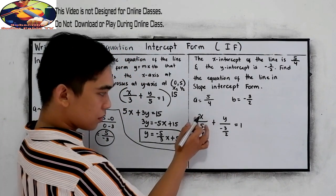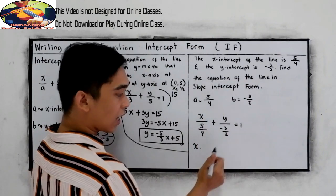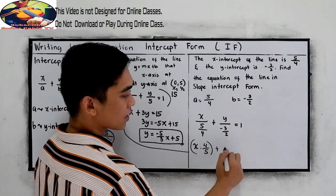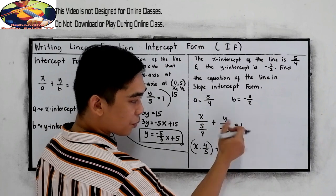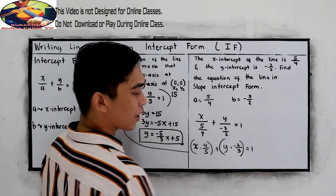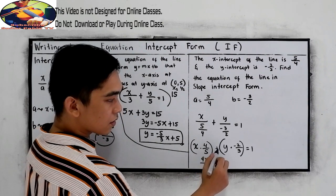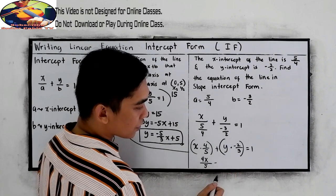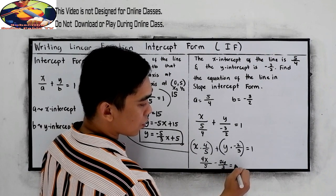Now, complex fraction: copy our numerator x, times the reciprocal, 4 over 5, plus copy the numerator y, times the reciprocal, negative 2 over 3, is equal to 1. So, x times 4 is 4x over 5. Now, we have negative y times 2, 2y over 3 is equal to 1.